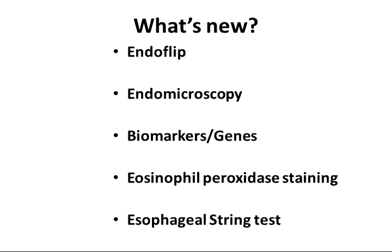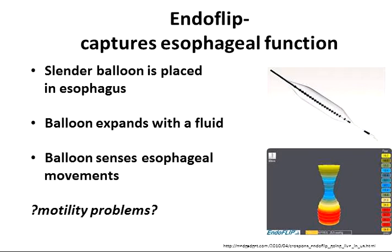What's new in this field? We are developing different tools to help us understand not only what happens in the esophagus, but whether there are features specific for this disease that would allow diagnostic clarity. One instrument is called the EndoFlip, which helps capture esophageal function — how stiff is the esophagus? A balloon fills with fluid and senses movements, showing how the esophagus is able to stretch and squeeze, which may help us think about motility problems.